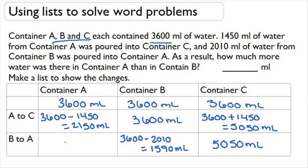Now container A is going to end up with more in it. We're going to start off with our 2,150 that we had from the last step. And then container B is going to be pouring in a positive 2,010. So we're going to be adding that. So that's going to give us a total of 4,160 milliliters in A.